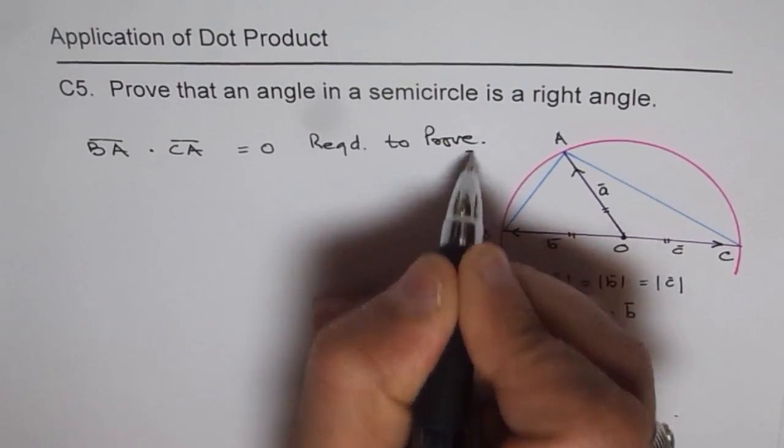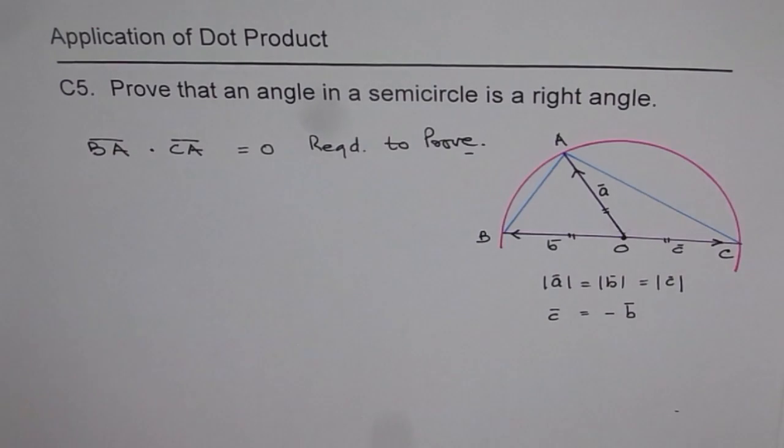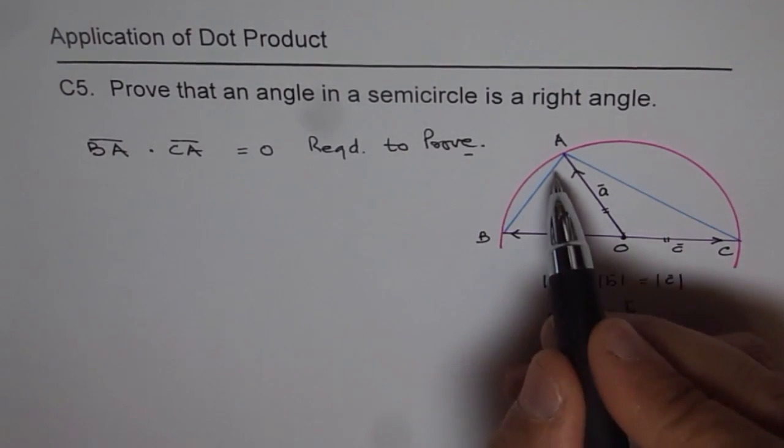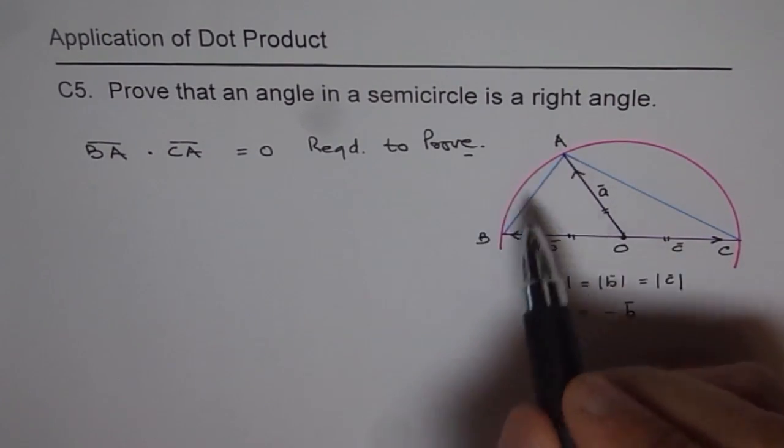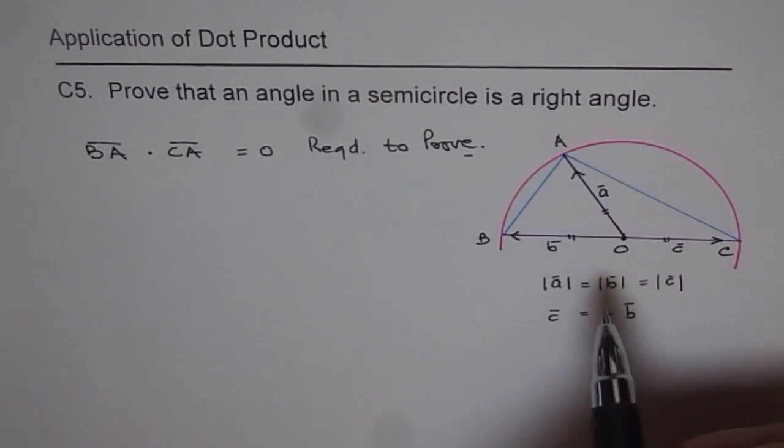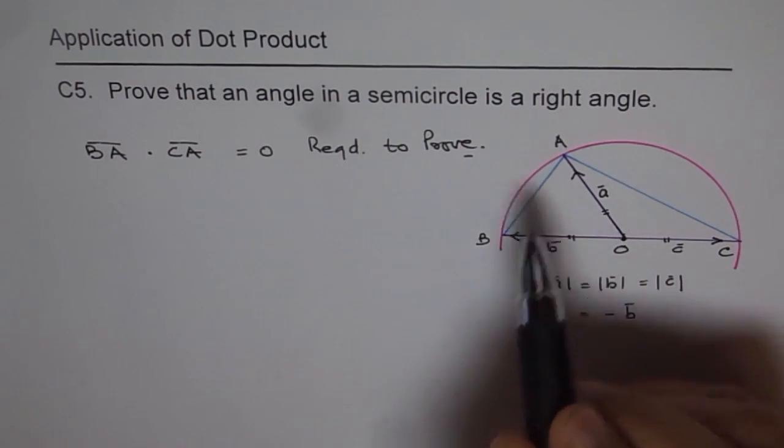In short, if I do that, that means that this angle is 90 degrees. So in a semicircle we'll always make a right angle since A is a general point.